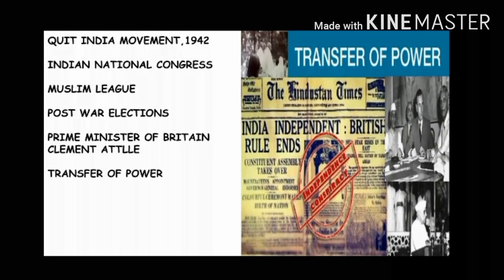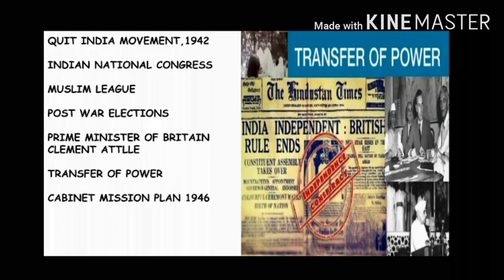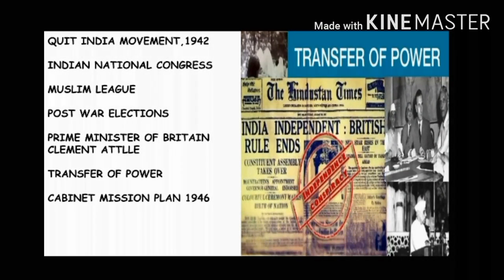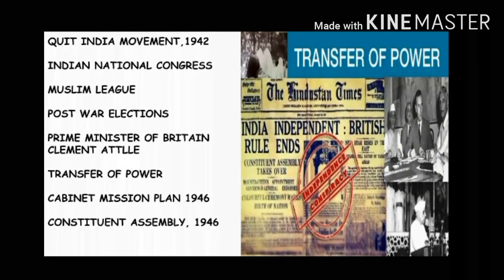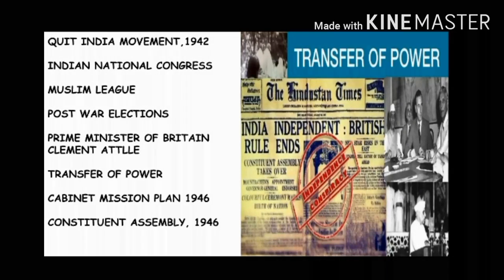The first attempt in this regard was the Cabinet Mission Plan, which was sent in 1946. Under this plan, a constituent assembly was to be set up to frame a constitution for a free and federal India.